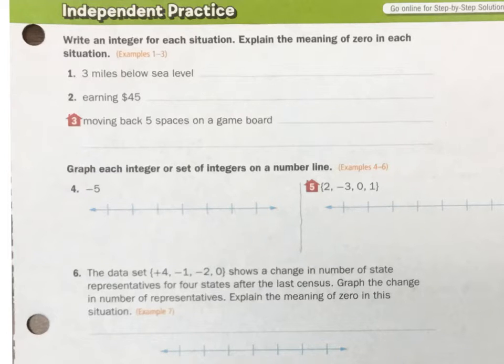Number 1, 3 miles below sea level. When you see the word below, it's going to be minus, so minus 3. And it always asks what is the 0 in these? Well, 0 would be nothing above sea level and nothing below sea level. 0 would be the sea level.